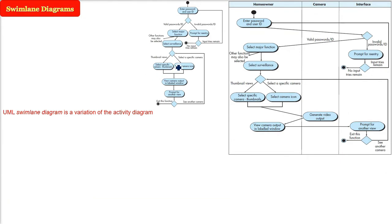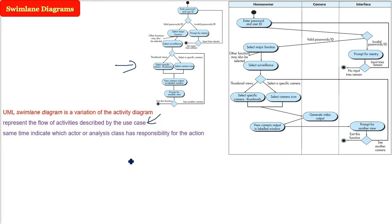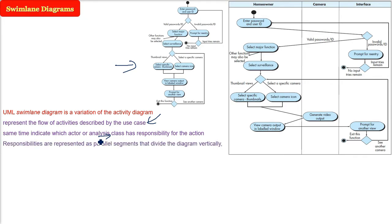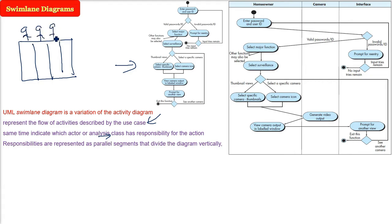Now comes the swim lane diagram. This is nothing but a variation of the activity diagram. These are additional diagrams that will enhance and emancipate the description of your use case. The swim lane diagram represents the flow of activities described by your use case. At the same time, it will indicate which actor or analysis class has responsibility for the action. The responsibilities are presented in parallel segments — we divide the diagram vertically. Just like in swimming, there are lanes — these are the different swim lanes. Let us assume we have defined three classes: homeowner, camera, and interface. Interface is the user interface as seen by the homeowner.